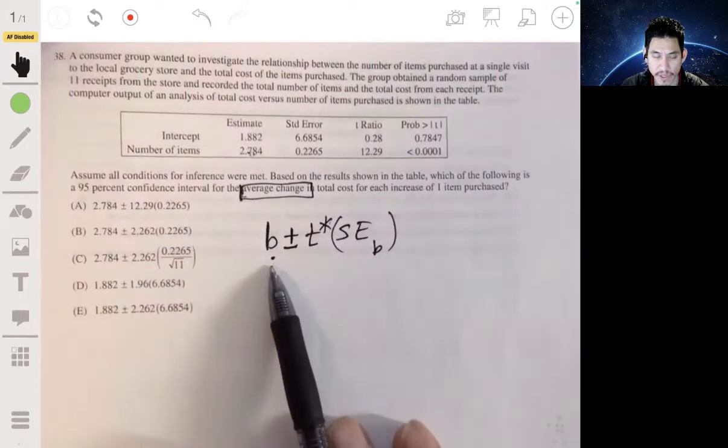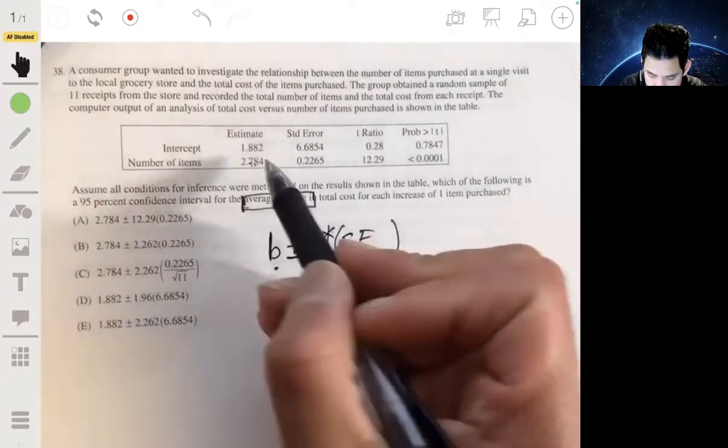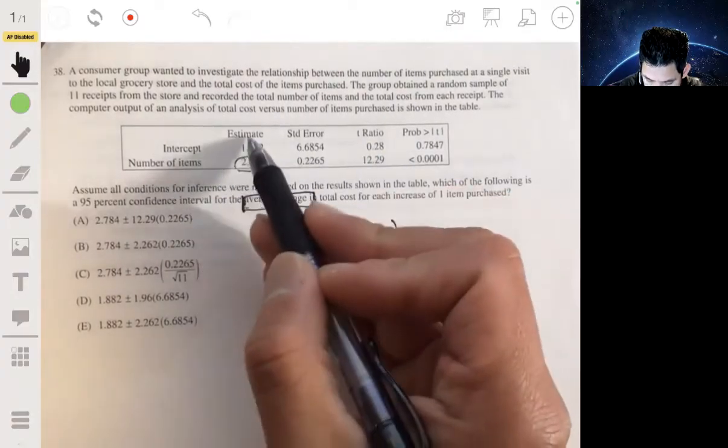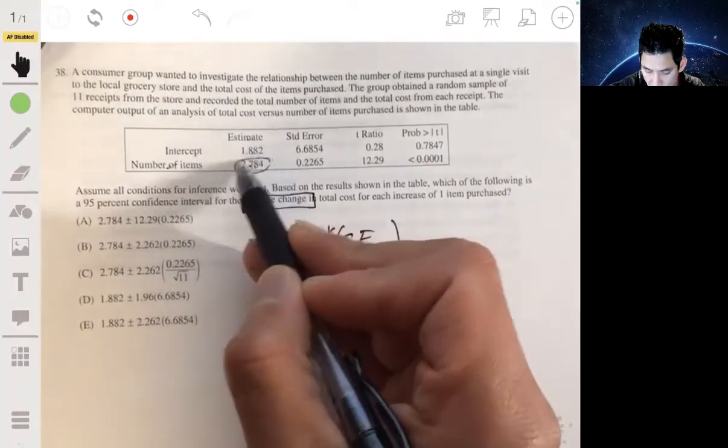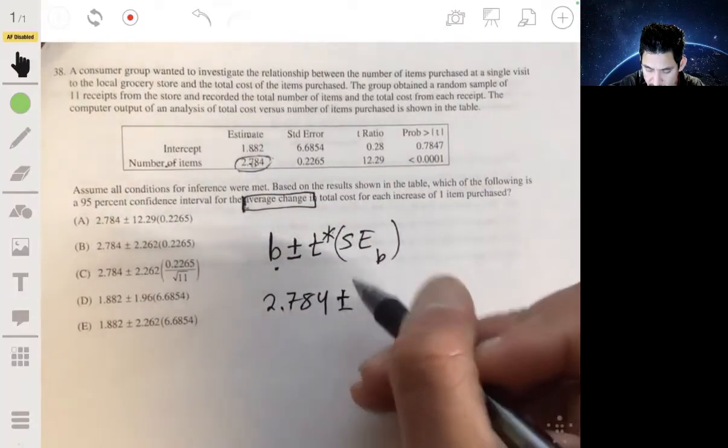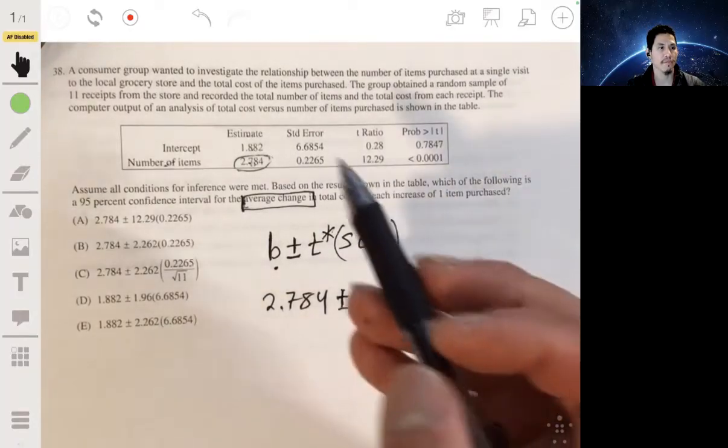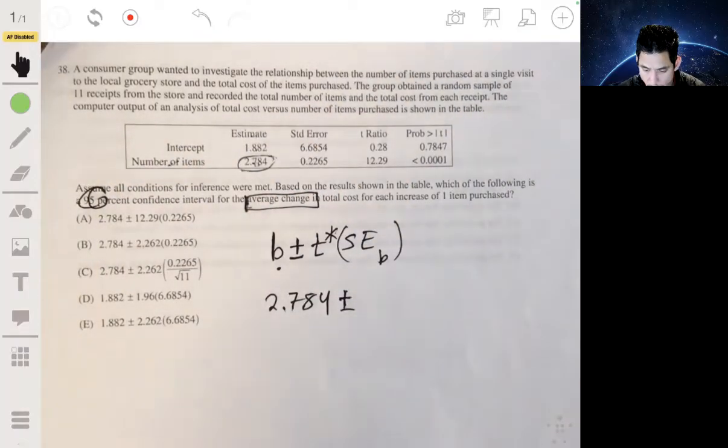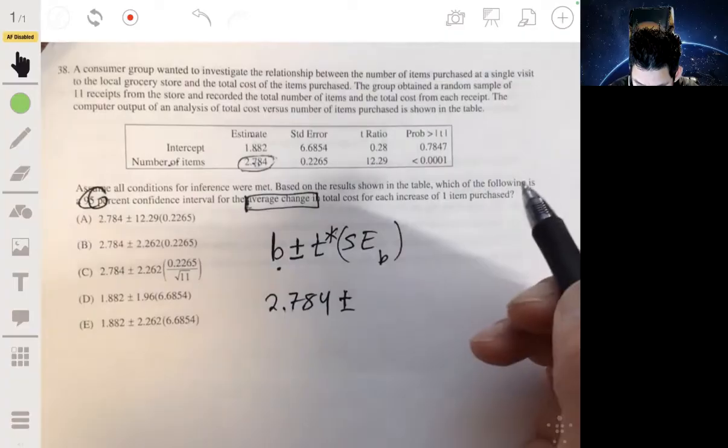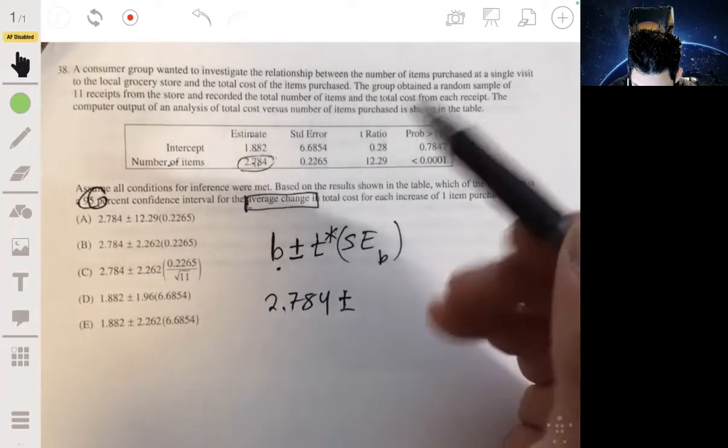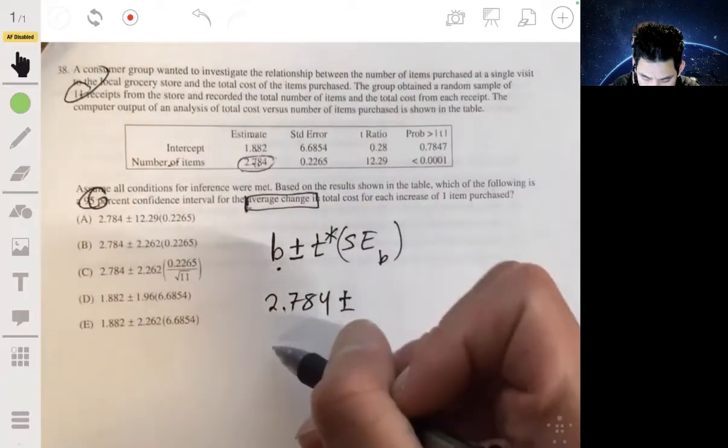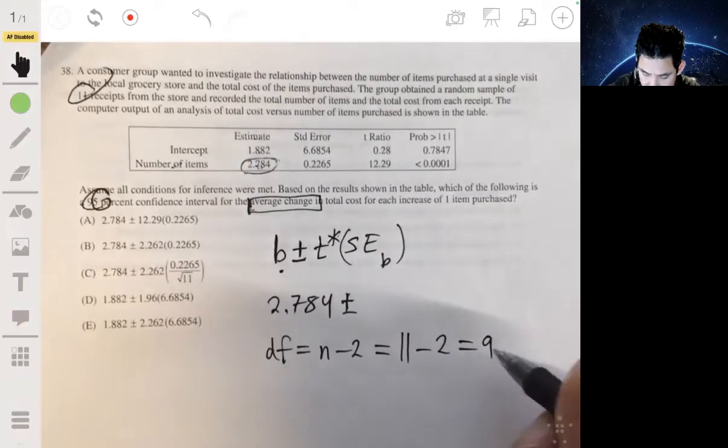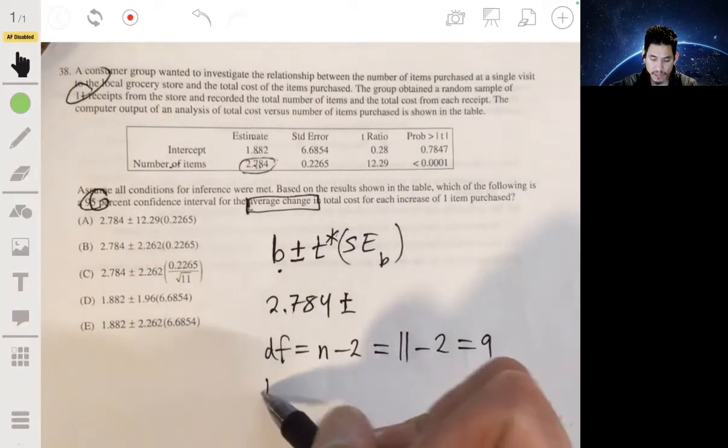Okay. Now, so where do we go from here? Well, our B, our point estimate, that's just 2.784. Because again, this is the number of items. This is the intercept plus or plus minus our T star. So that's going to be our critical value for a 95% confidence interval with degrees of freedom. Remember, we need a degrees of freedom value. And let's look at our sample size is 11. Degrees of freedom is our sample size minus 2. So in this case, it's 11 minus 2. So it's going to be 9.